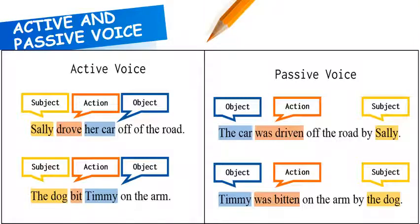A sentence in which the subject of the verb is the agent of the action denoted by the verb is said to be in the active voice. A sentence in which the subject does not perform the action denoted by the verb but is acted upon is said to be in the passive voice.